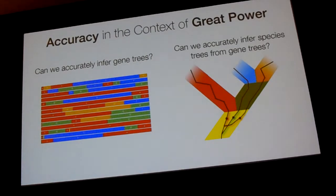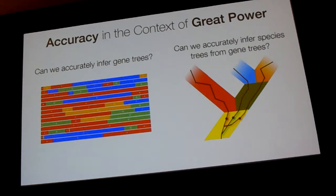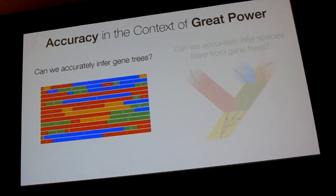Accuracy in the context of phylogenomics can often be broken up into two broad categories. One has to do with the accurate inference of gene trees — we're trying to model the process of sequence evolution. We can also think about how we can accurately infer species trees once we've got those gene trees, and how we model the processes that create gene tree variation. Today we're going to focus primarily on inferring accurate gene trees by thinking about how we model sequence evolution.